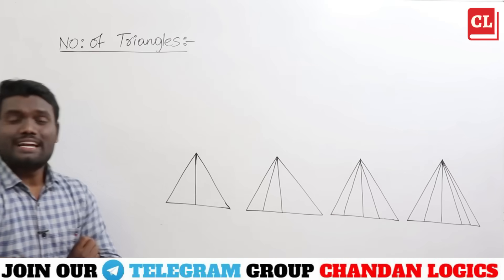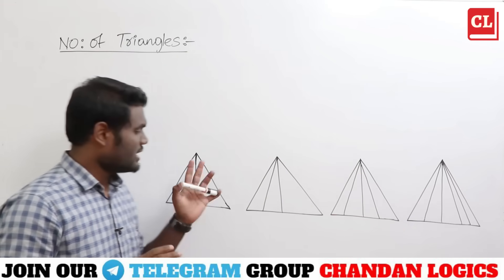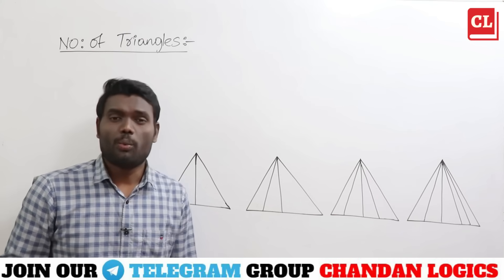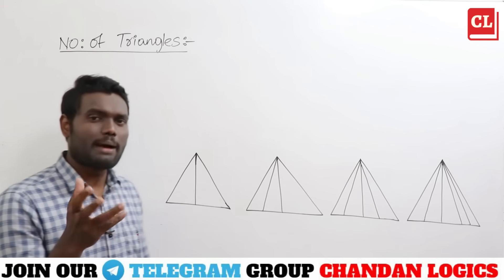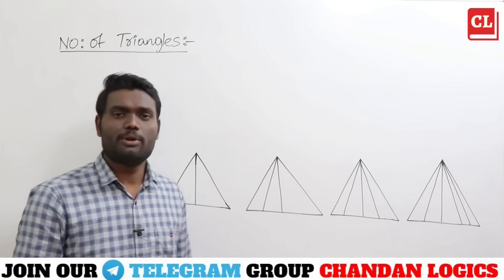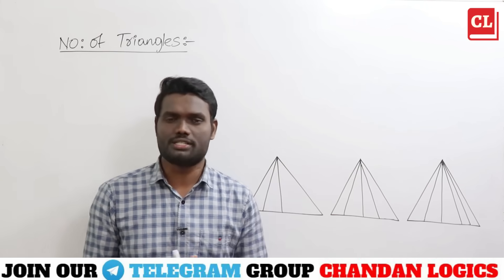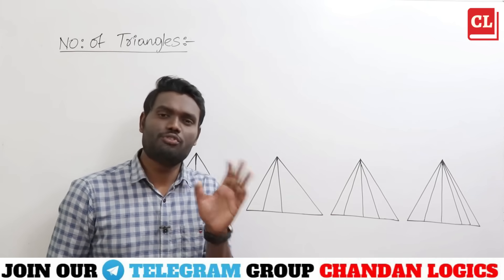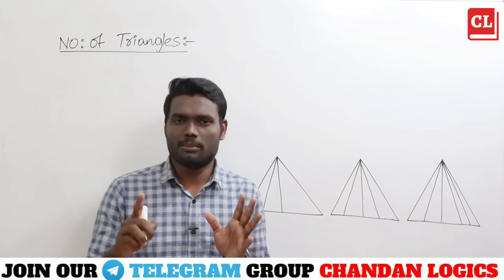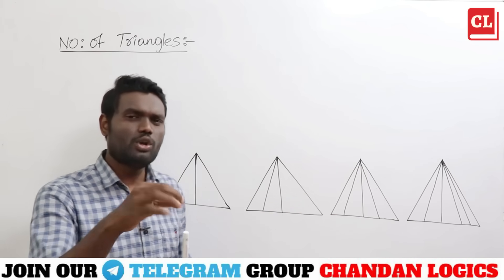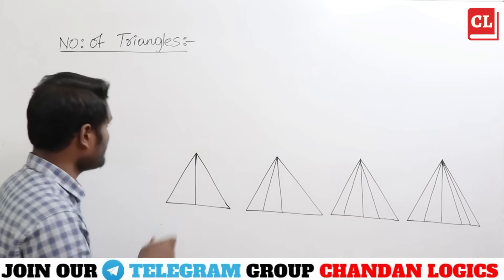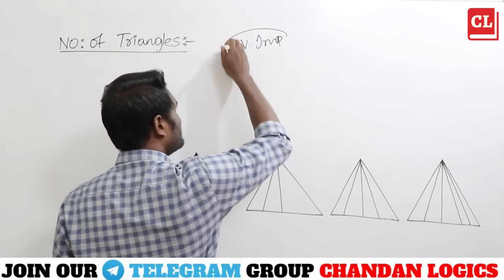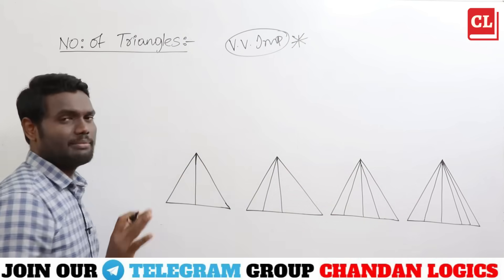Let us calculate how many triangles are there in these figures. Counting triangles is really important because examiners ask from triangles more frequently — triangles have more variations compared to squares and rectangles. Squares and rectangles have fewer variations, but triangles have more. Even with more variations, we'll have simple and beautiful techniques. Counting the number of triangles is very important because these questions come frequently in examinations.